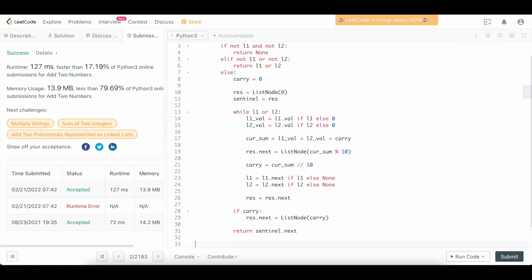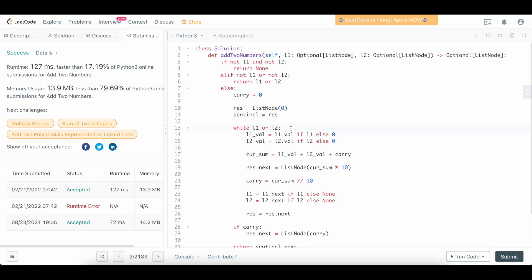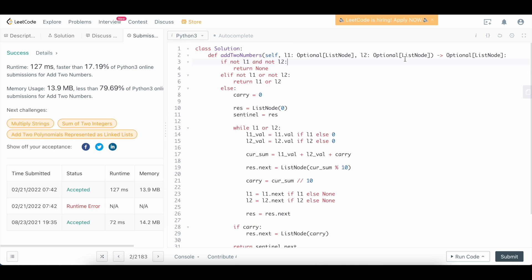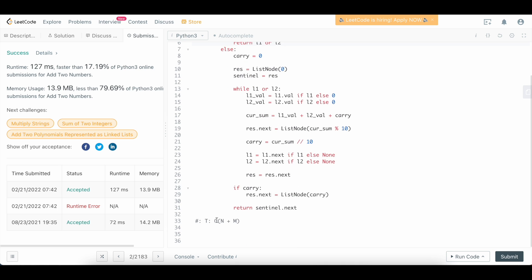Let's think about the time and space complexity here. So time complexity: similar to the Add Strings problem, we're going to have to parse out the entirety of l1 and l2, so that is going to be big O of n plus m, where n is the length of l1 and m is the length of l2. And then similarly for the space complexity, it's going to be big O of n plus m.